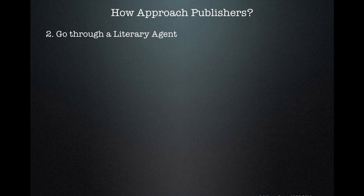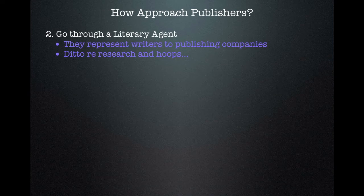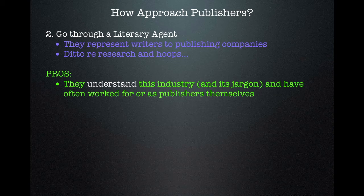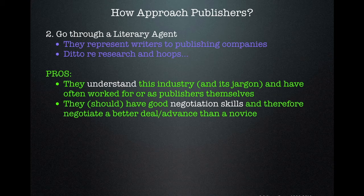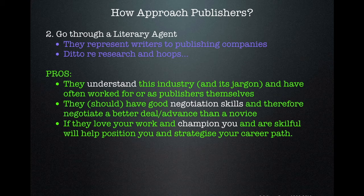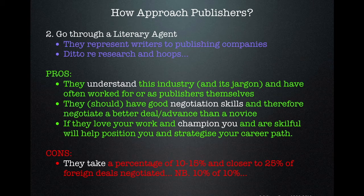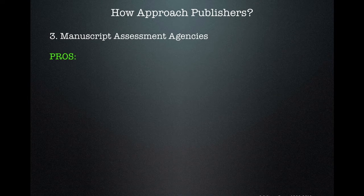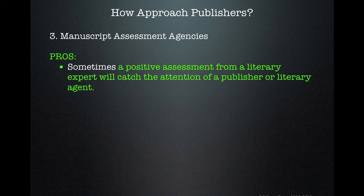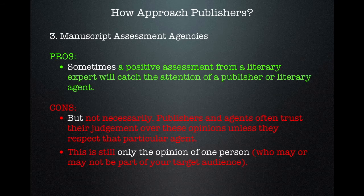The second option for approaching publishers is to go through a literary agent. These people represent writers to publishing companies, and you've got to do the same research and jump through the same hoops. The pros are they understand the industry and its jargon, they've often worked for or as publishers, and they should have good negotiation skills and could negotiate a better deal or advance than a novice. If they love your work and are skilful, they'll help position you and strategise your career path. But they take 10–15% and closer to 25% of foreign deals, and that comes out of your 10%. It can be as difficult to get an agent as a publisher. Manuscript assessment agencies can be useful, especially if you receive a positive report to include in your submission — that might catch the attention of a publisher or literary agent, but not necessarily.